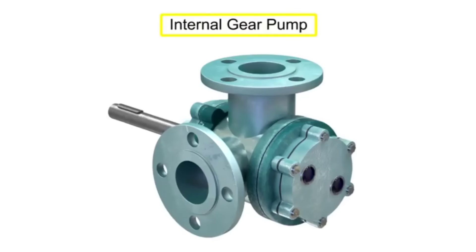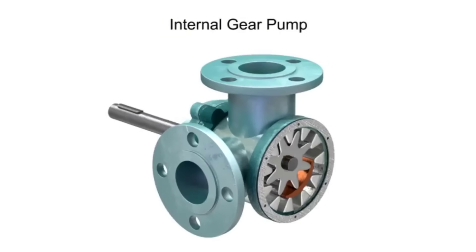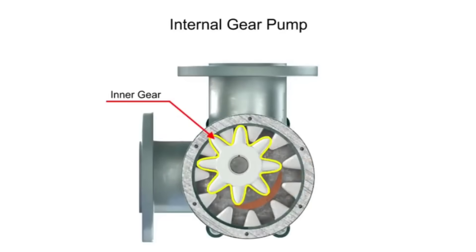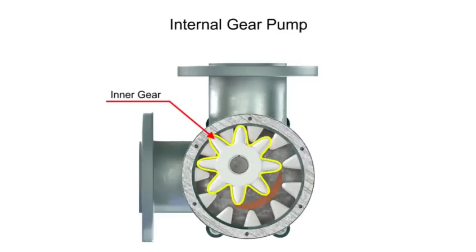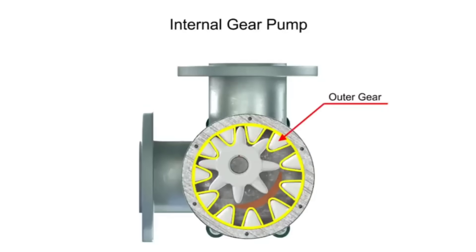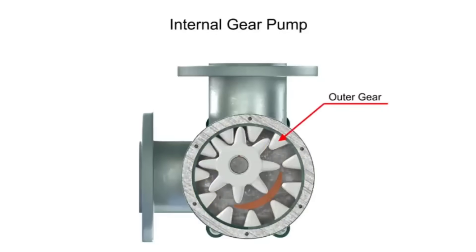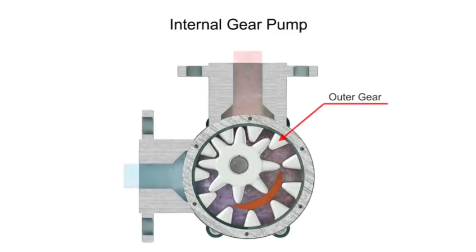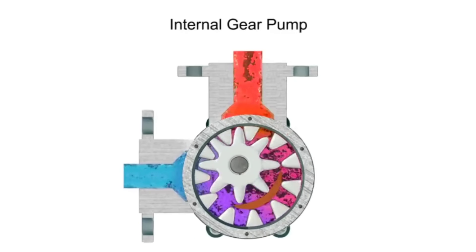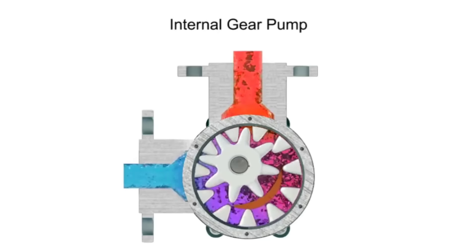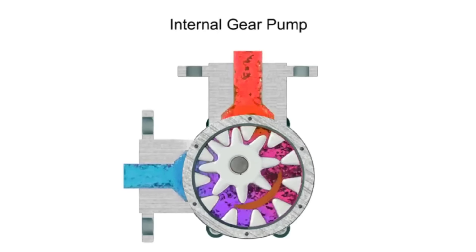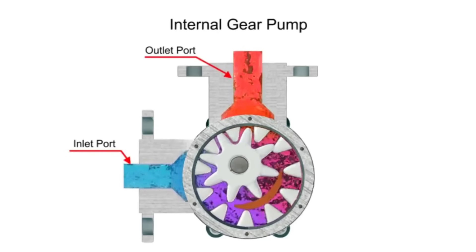Internal gear pumps are exceptionally versatile. This type of pump has one inner gear inside a second outer gear. The inner gear has a shaft driven by a motor and has teeth that protrude outward, while the outer gear has teeth that protrude inward toward the center of the pump. As the inner gear rotates, it meshes with and moves the outer gear, and liquid is trapped in the gear spaces and carried from the inlet to the discharge.